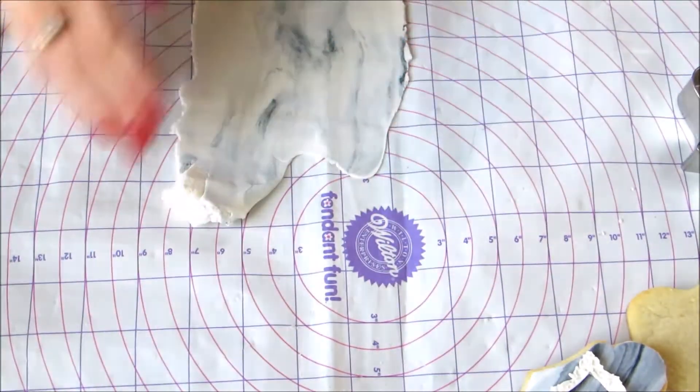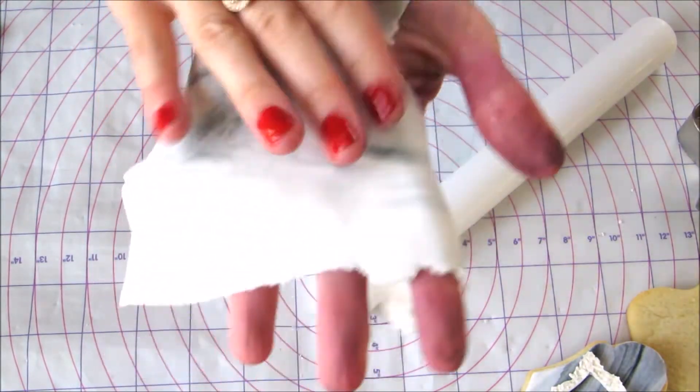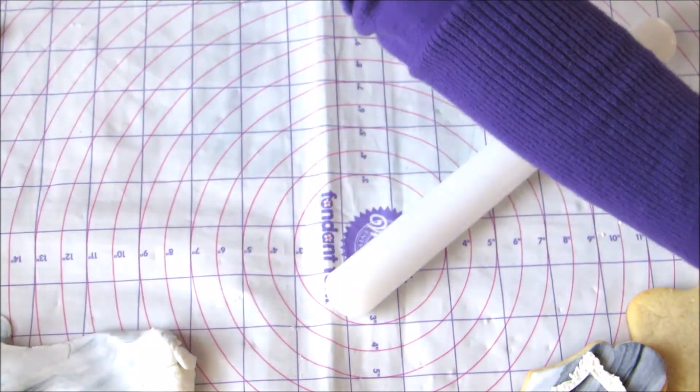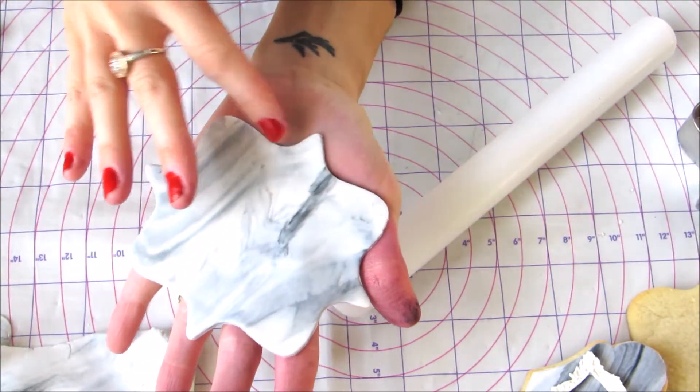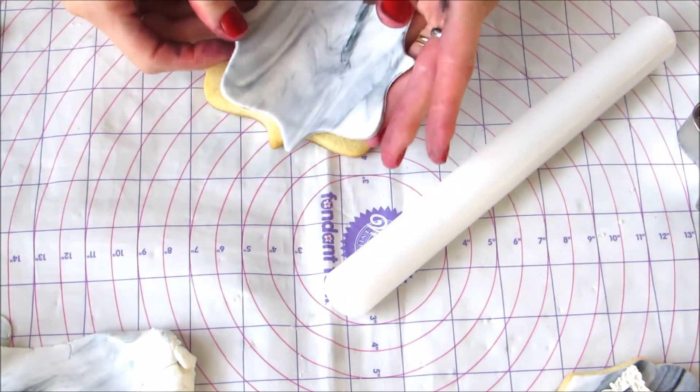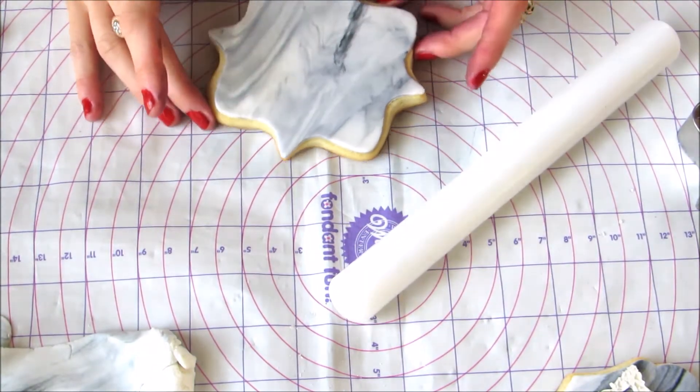This one's very light because I didn't put too much black in. I already have one that's done and it looks like this. This one I put a little more black in so you can see the streaks. You then want to take some water or cornstarch and put it on your cookie. It's as simple as that.